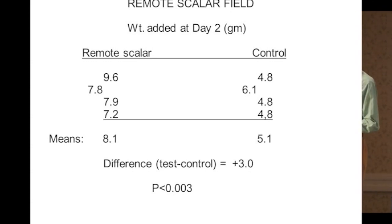Here's some results. Got a bit out of line. Anyway, this is the weight added to the grids and the seedlings at day two, the test here, which I've called a remote scalar field, as against the control, and the difference is three grams, highly significant. These are eight experiments each of about three days, so it takes a lot of time.